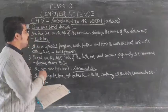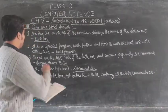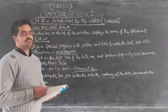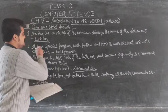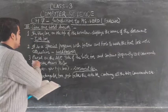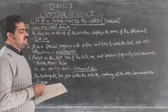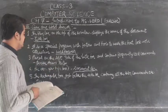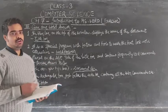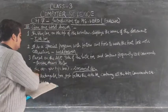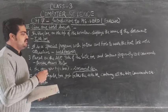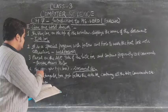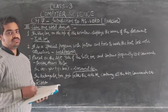Now question 3: give one word answers. The first one — the blue bar on the top of the window that displays the name of the document — is called the title bar. The second one — a special program with features and tools to make the text look more attractive — the answer is word processor. The third one — placed on the left side of the title bar and contains frequently used commands — the answer is quick access toolbar.